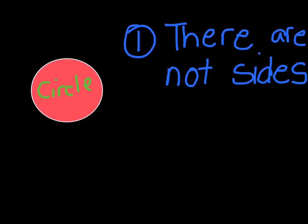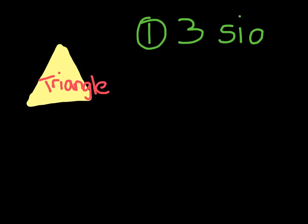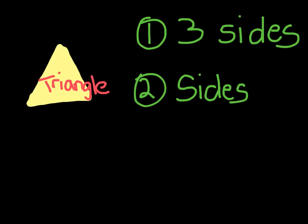Our next shape is going to be a yellow triangle. The triangle has one main rule: it has three sides. The side lengths can vary from triangle to triangle depending on if it is a right triangle, equilateral triangle, isosceles triangle, or a scalene triangle. So the second rule is that side lengths may vary.